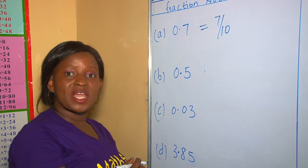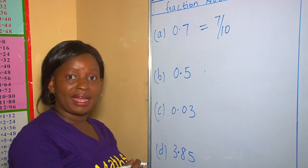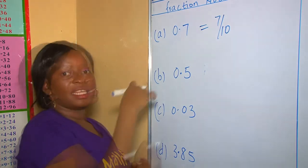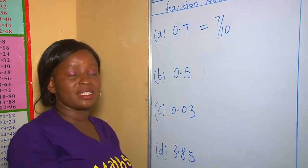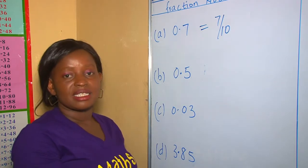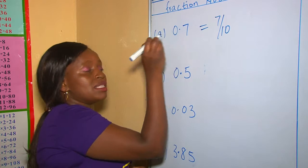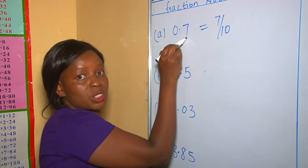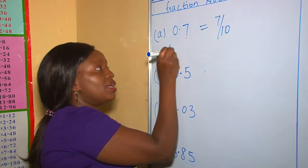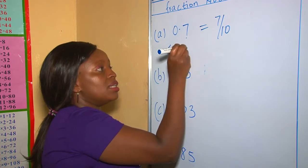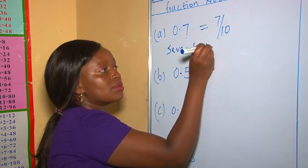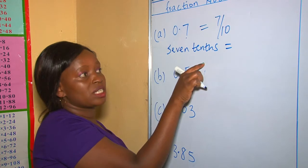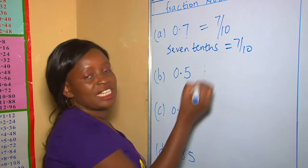Or, we can be guided by the decimal in words. This decimal in words is read as seven tenths. Since its place value here is tenths, seven tenths as a fraction is seven out of ten.